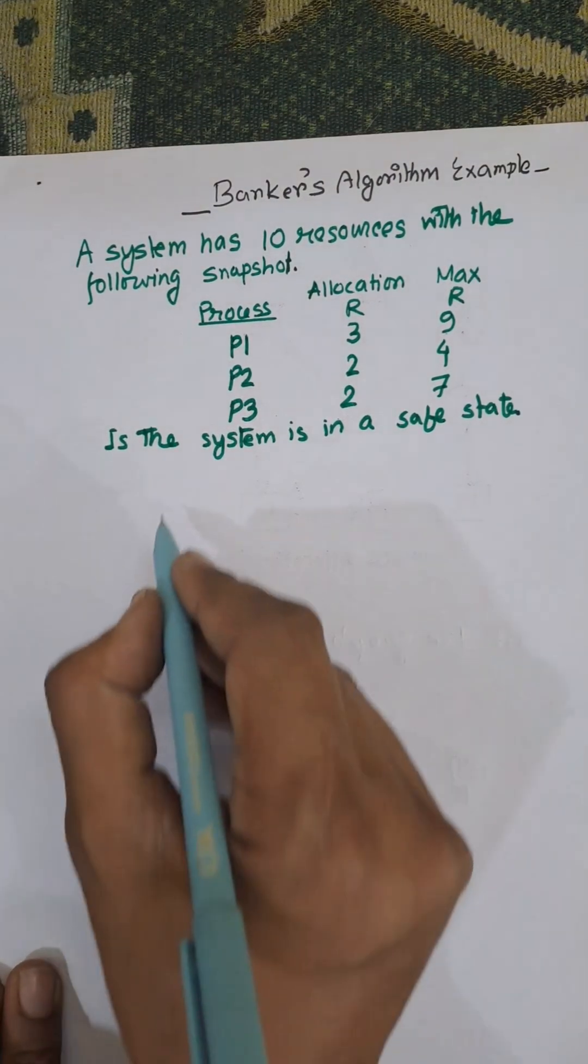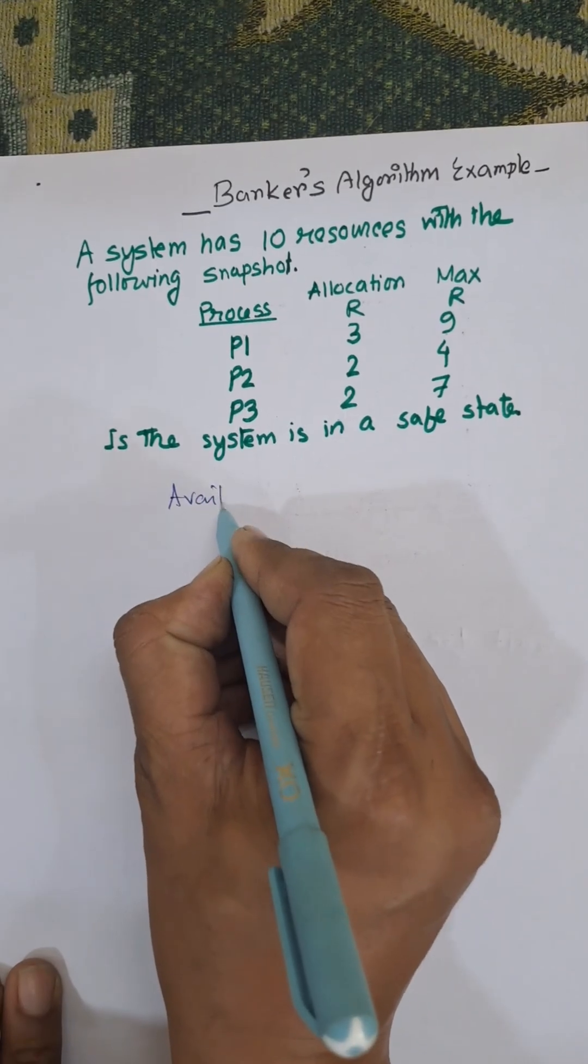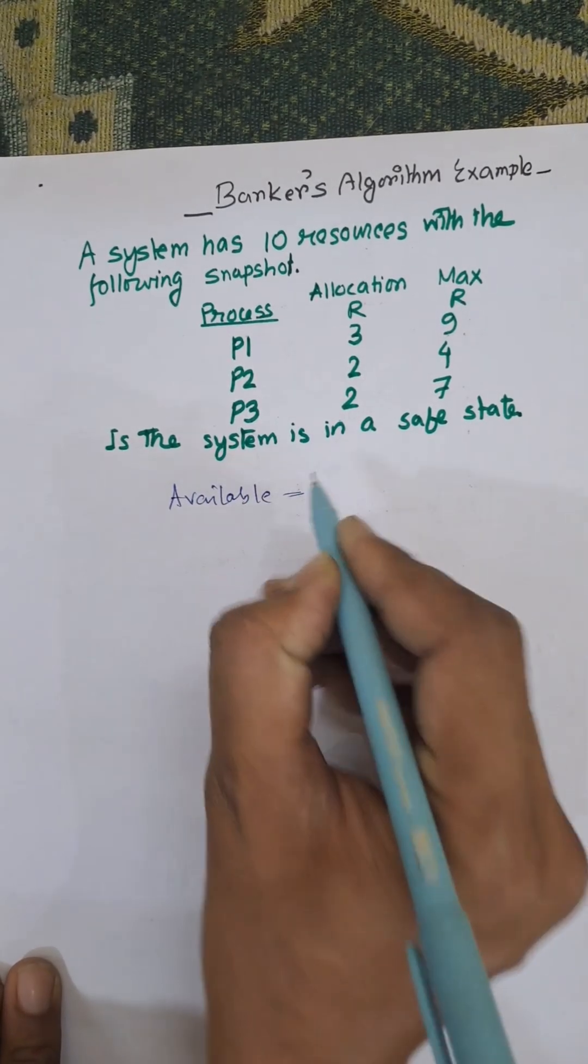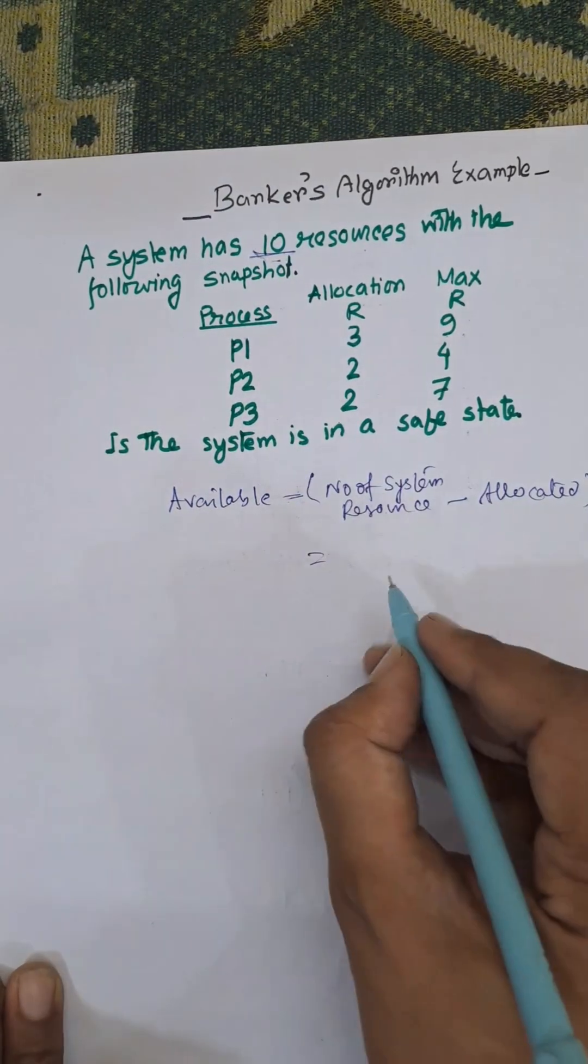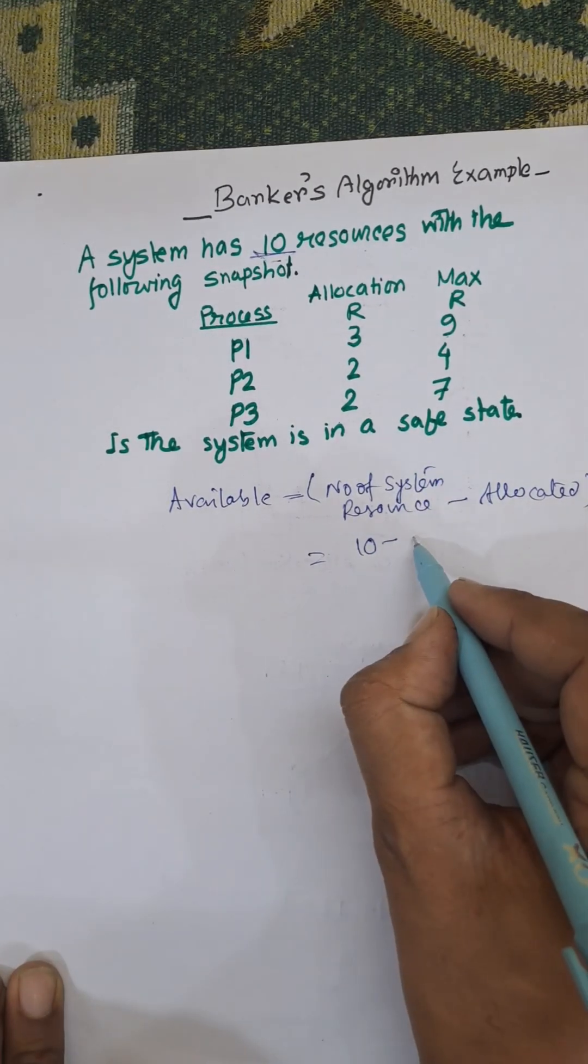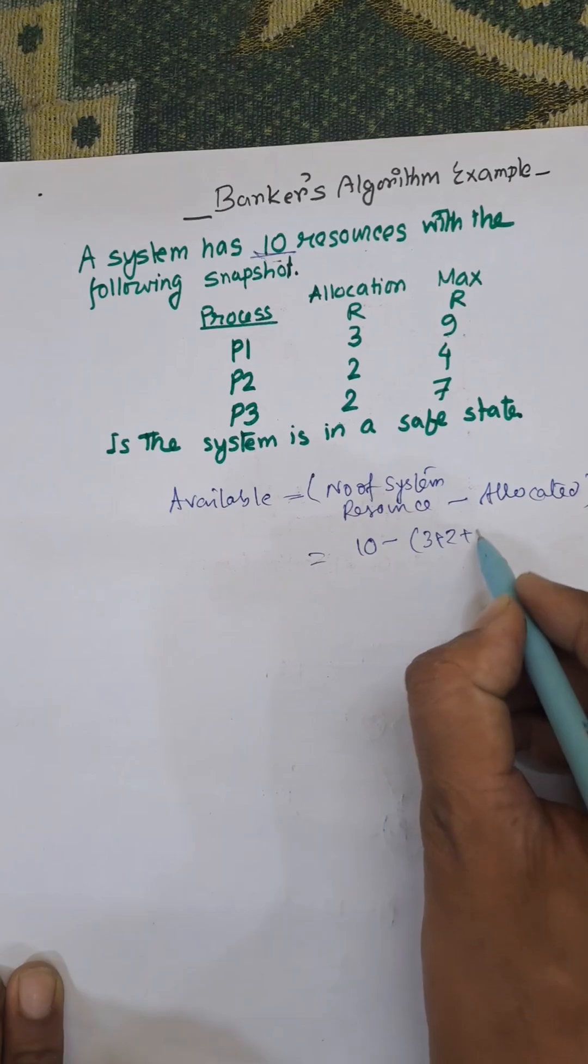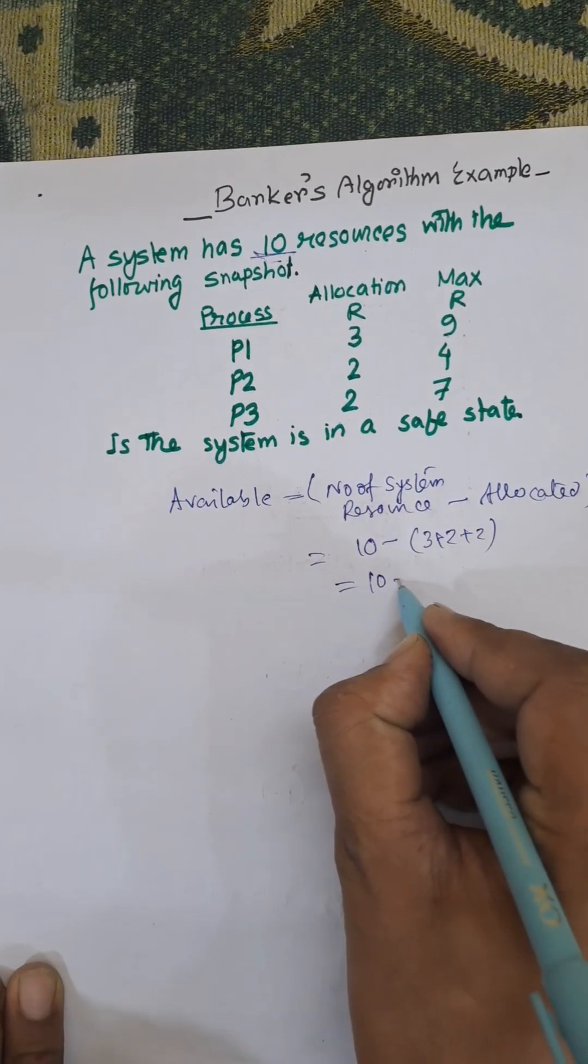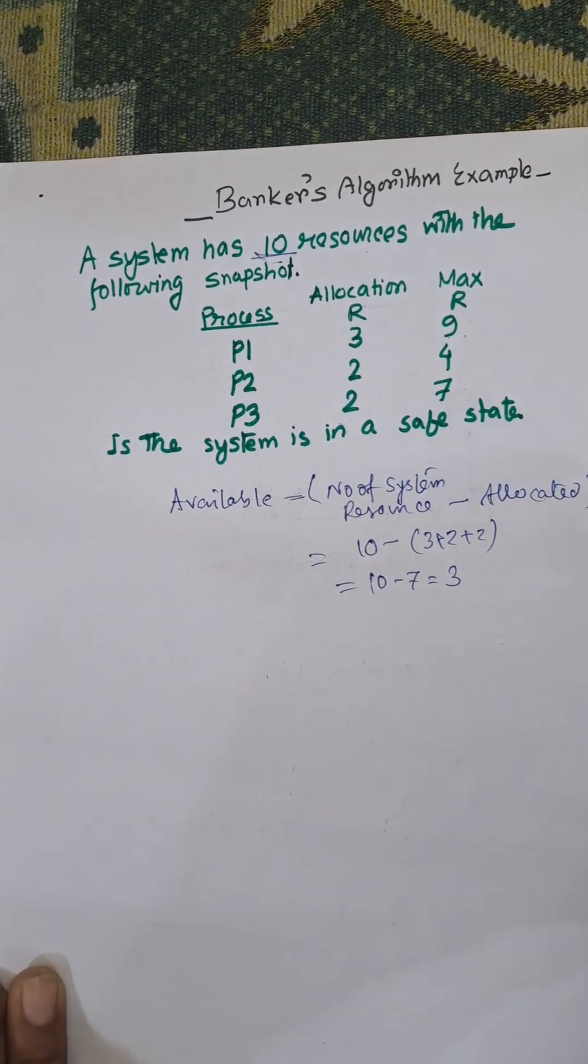First of all, we need to find the available. Available means available resources. Available equals number of system resources at 10, and already allocated 3 plus 2, 5 plus 2, 7. 3 plus 2 plus 2, that is equal to 7. 10 minus 7 equal to 3. So available equals 3.